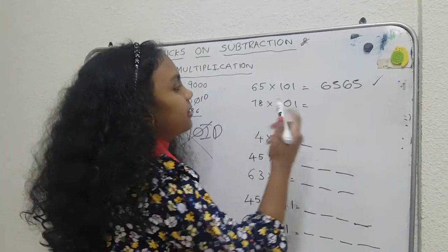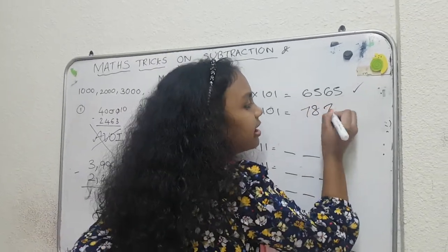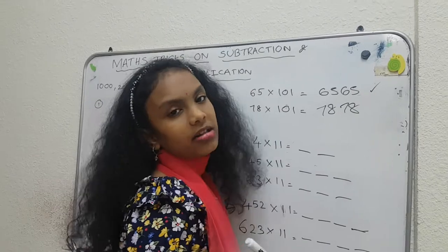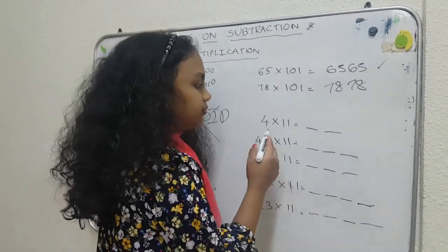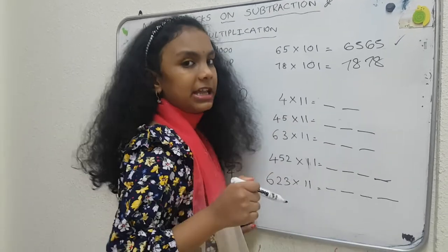Now, we will do another same type. I am going to answer these questions very easily. 78 times 101 is 7878. See? Simple tricks are easy for you. So, this is an 11 table trick. Same multiplication.